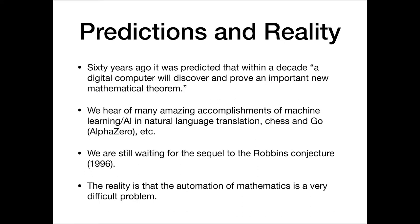But asking around, I still don't know of a major mathematical theorem that's been proved using machine learning. And we're still waiting for the sequel to the Robbins conjecture. And the reality is that automation of mathematics is a very difficult problem.